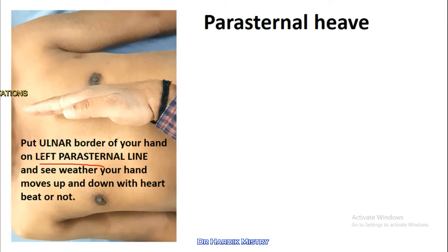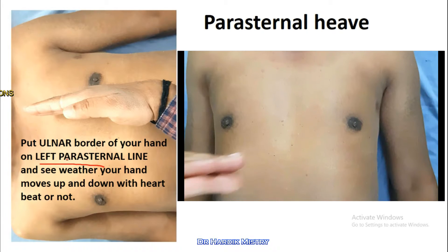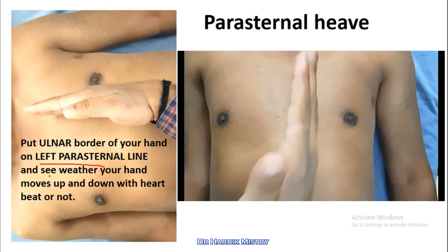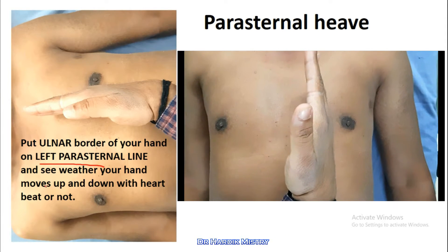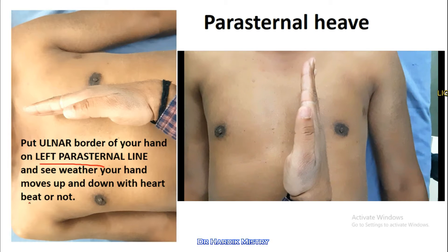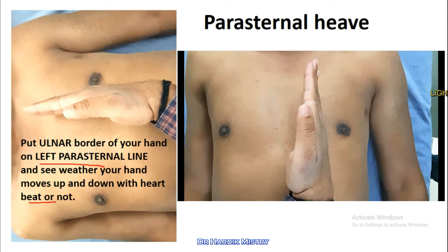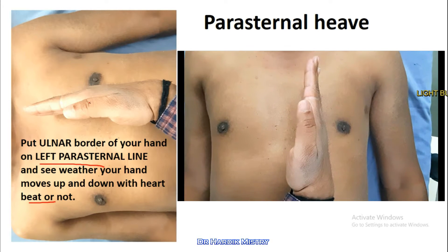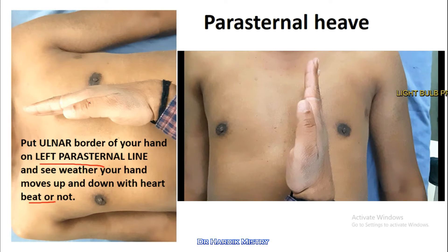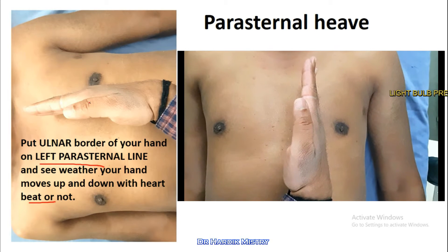Put the ulnar border of your hand on the left parasternal line and see whether your hand moves up and down with the heartbeat or not. If your hand is moving up and down, then there must be right ventricular hypertrophy.